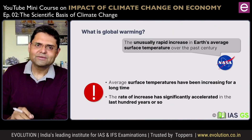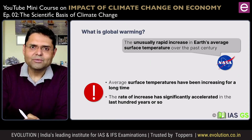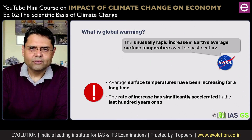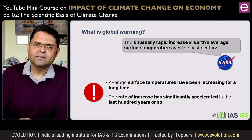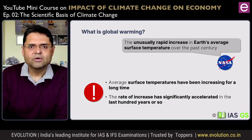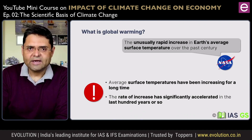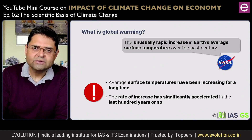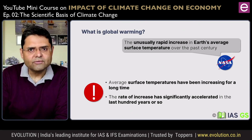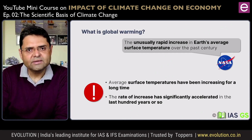Let us start first with what is global warming. Whenever we talk about warming, there is a sense that something is heating up — from its base state, it is getting warmer. In this case, we are talking about the heating up of the earth as a system. Specifically, the atmosphere, the water bodies on the planet earth and the lithospheric formations — all of them are heating up. Their mean temperature has steadily been rising.